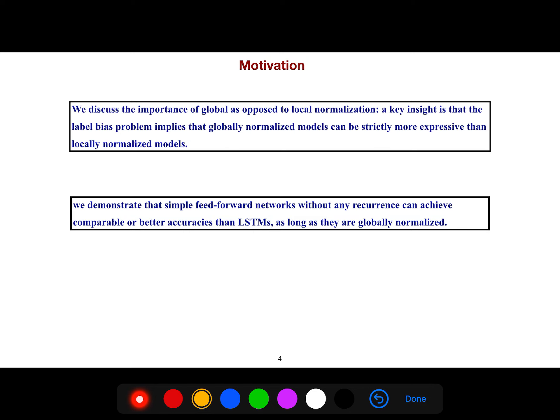We discussed the importance of global as opposed to local normalization. A key insight is that the label bias problem implies that globally normalized models can be strictly more expressive than locally normalized models.